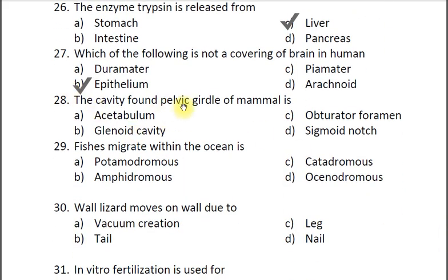Question twenty-eight: The cavity found in the pelvic girdle of mammals is — A acetabulum, B glenoid cavity, C obturator foramen, D sigmoid notch. The correct answer is A acetabulum. The three bones — ilium, pubis and ischium — converge centrally to form a deep cup-shaped cavity called the acetabulum.